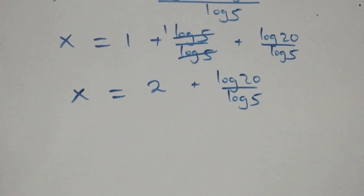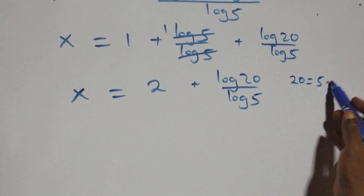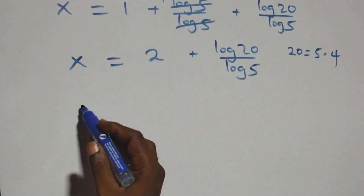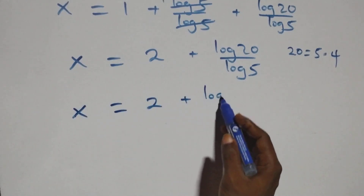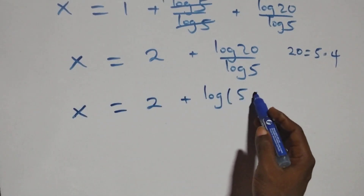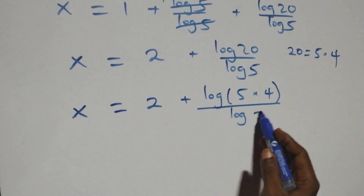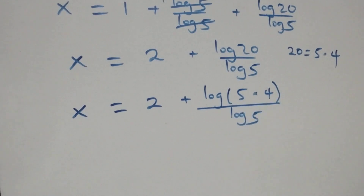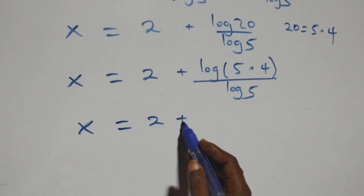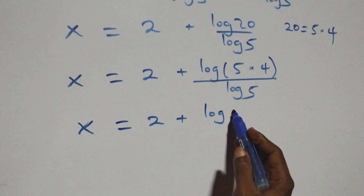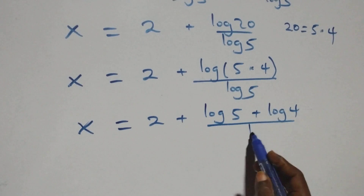The next step: we can also express 20 as 5 times 4. So over here this becomes x equals to 2 plus log of 5 times 4, over log 5. This also follows the law of logarithm, giving us x equals to 2 plus log 5 plus log 4, all over log 5.